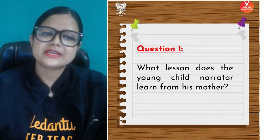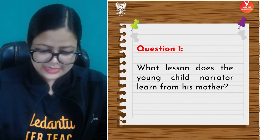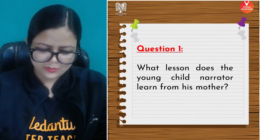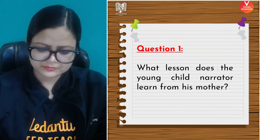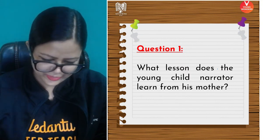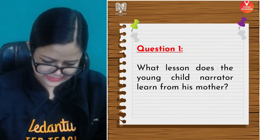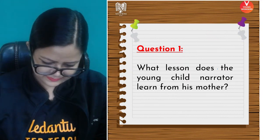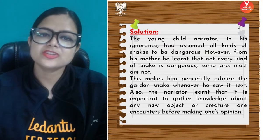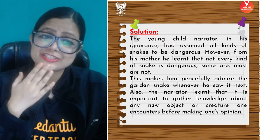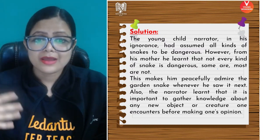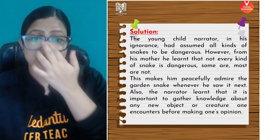Now, what lesson does the young child narrator learn from his mother? In his ignorance, he had assumed that all snakes are dangerous. However, from his mother he learned that not every kind of snake is dangerous — some are not dangerous at all. This makes him peacefully admire the garden snake whenever he sees it next.